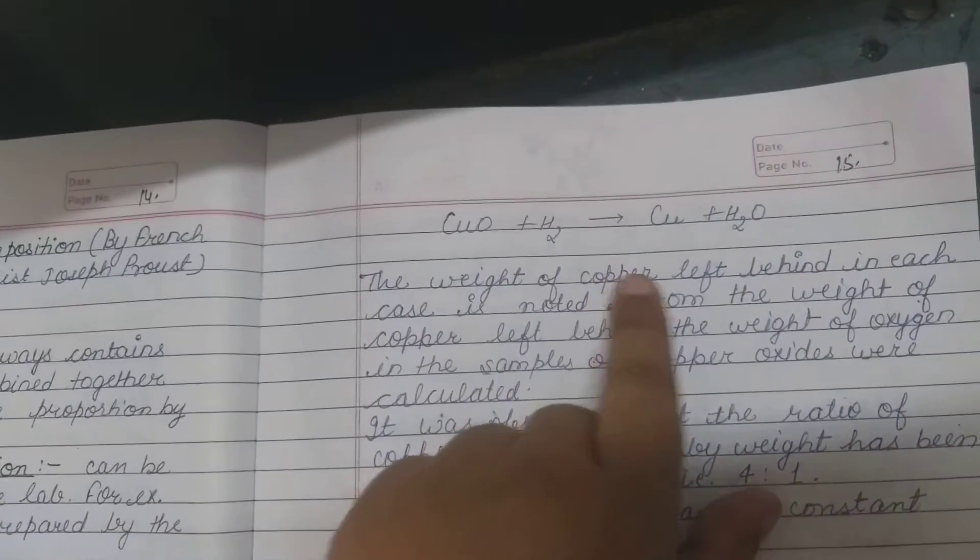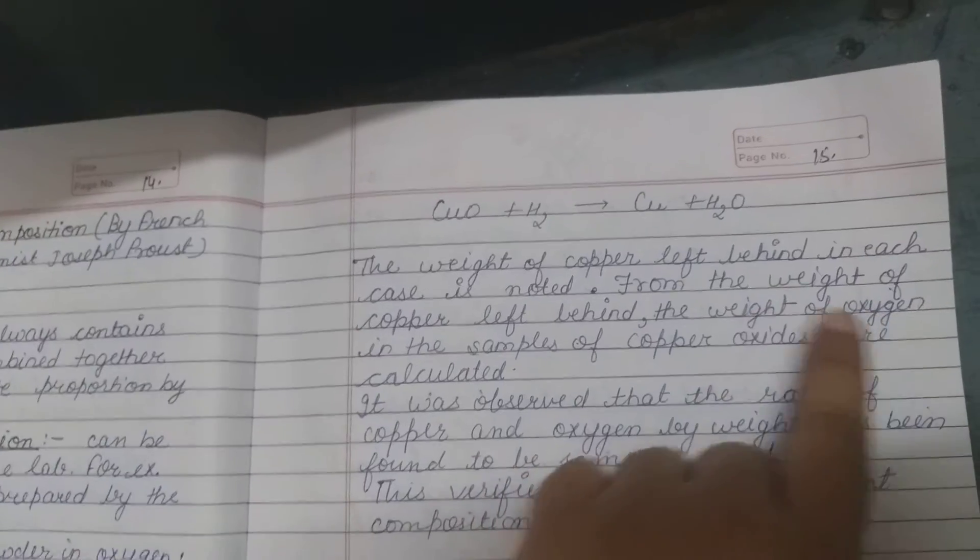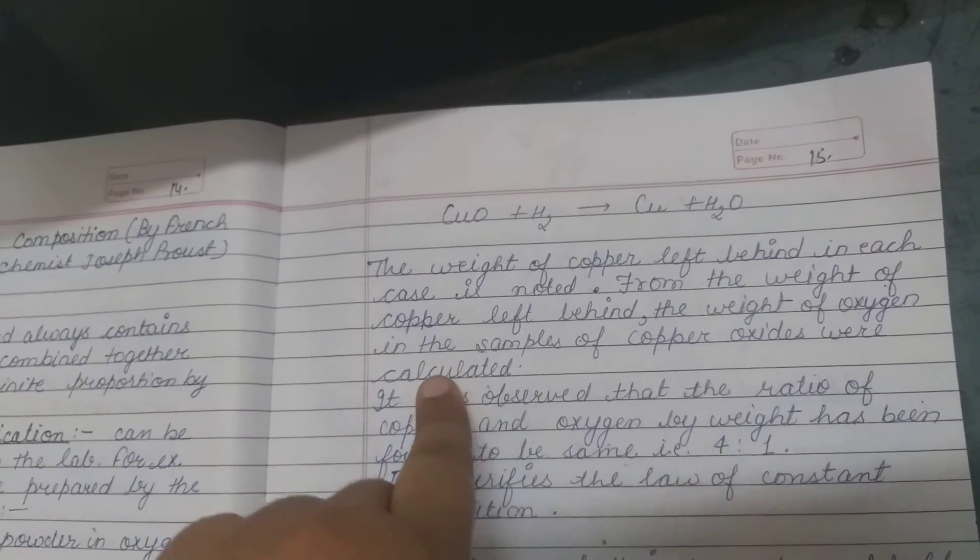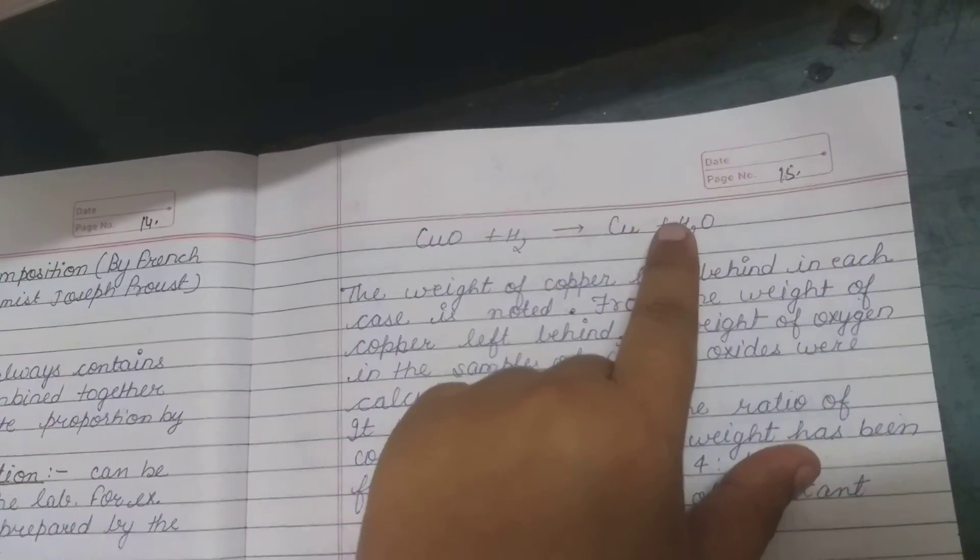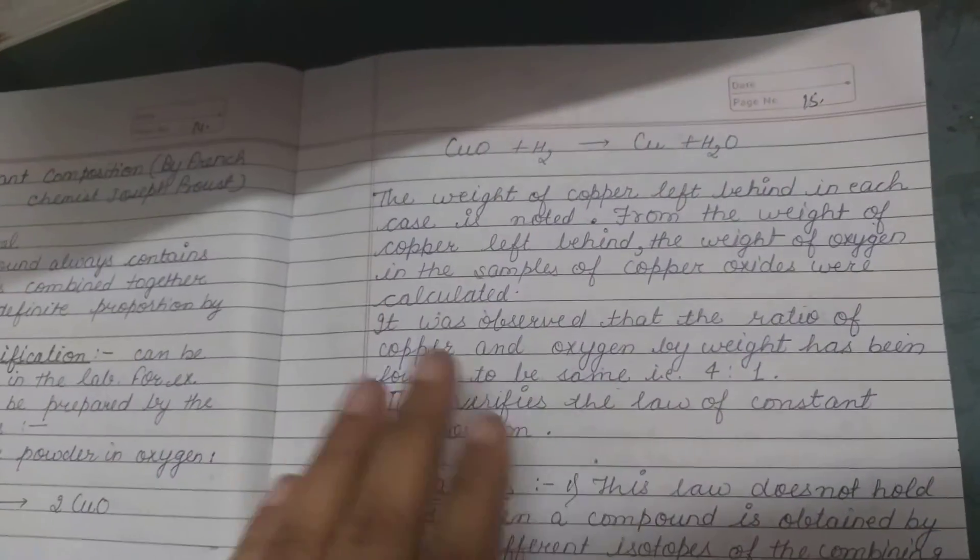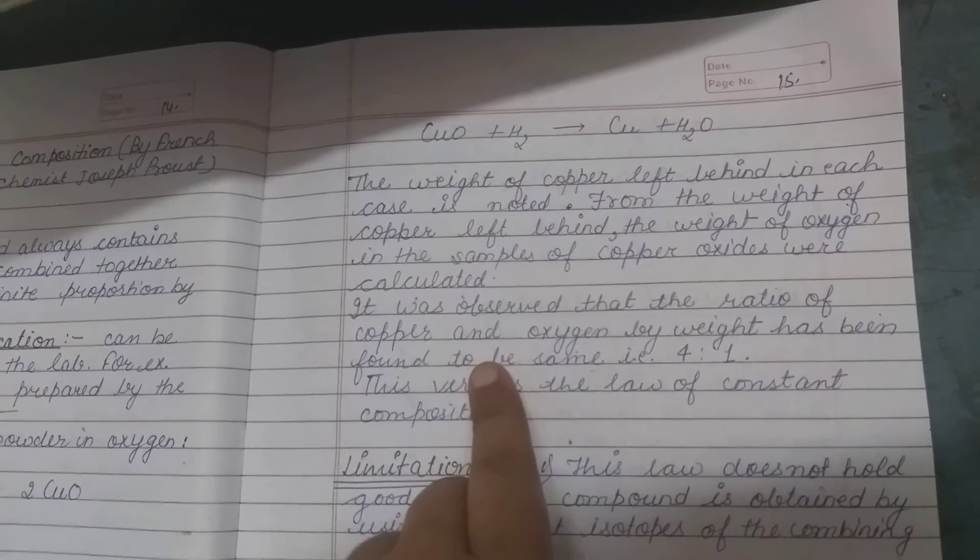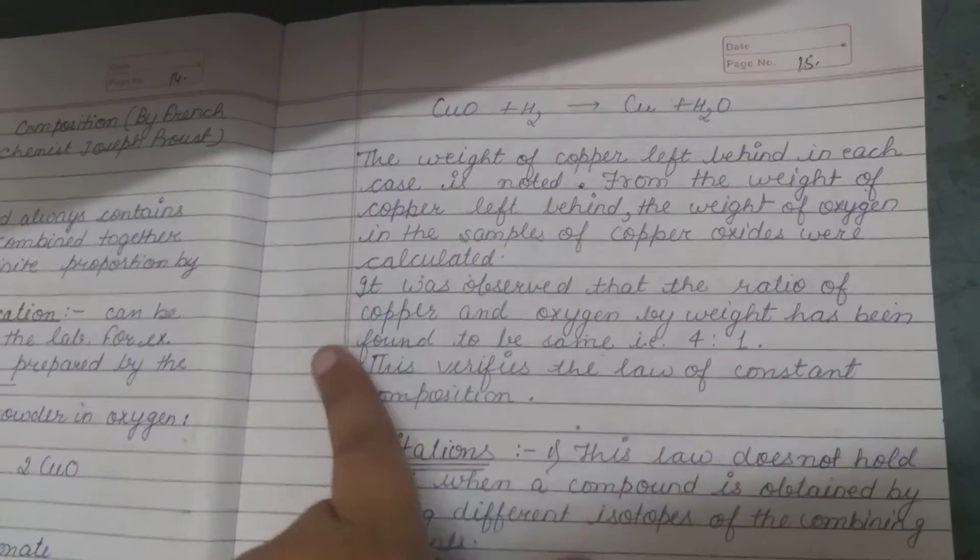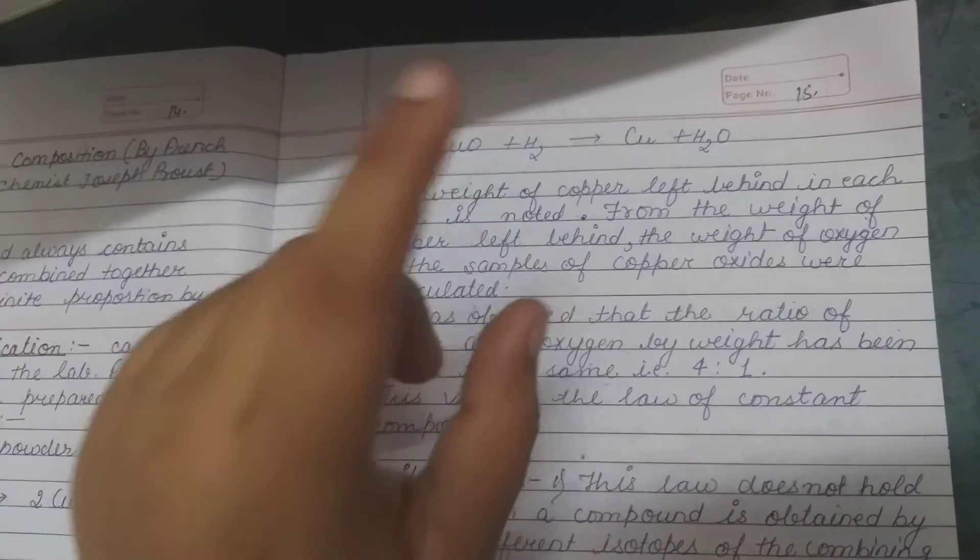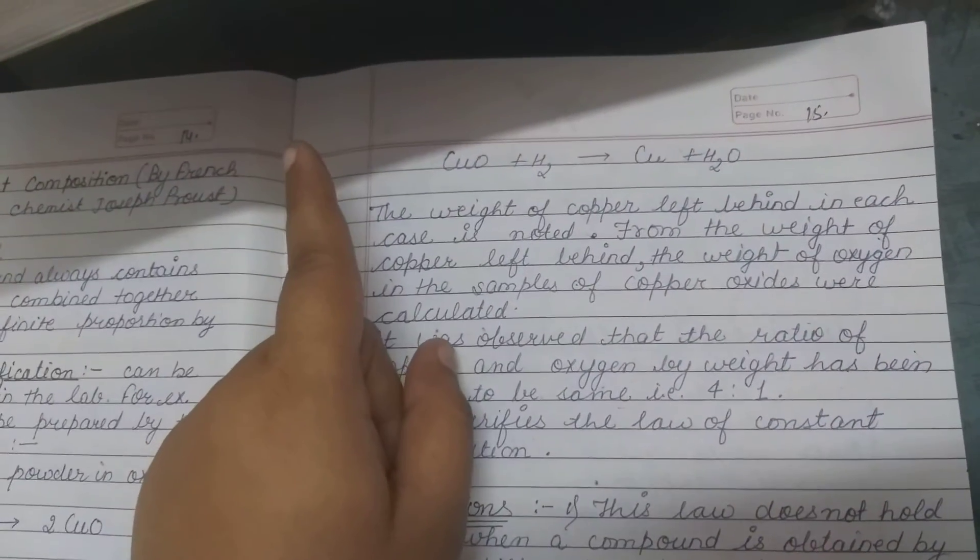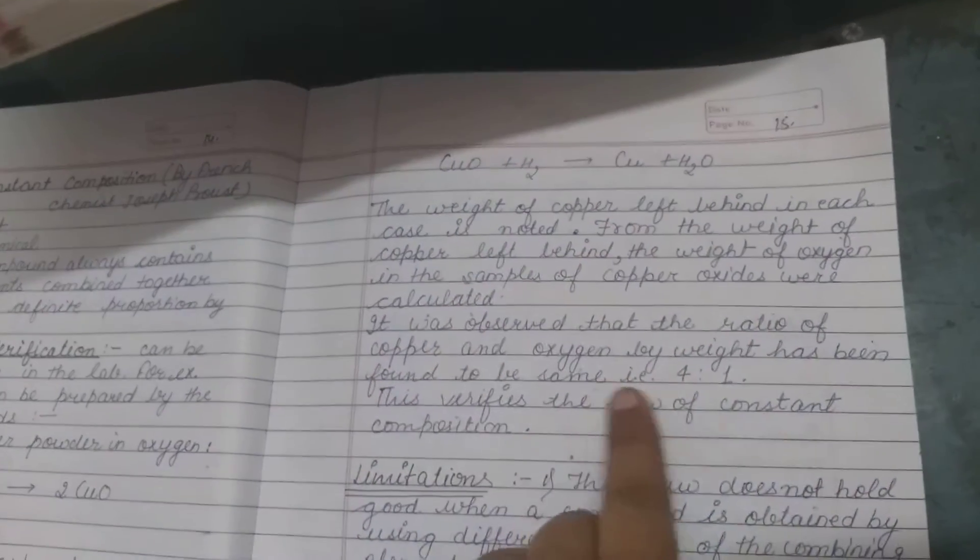From the weight of copper left behind, the weight of oxygen in the sample of copper oxide can be calculated. The ratio of copper and oxygen by weight is the same in all samples—4 ratio 1.